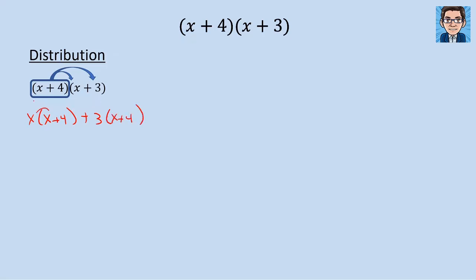Now if we do distribution on each of these, we get x times x is x squared. The x times the 4 is 4x. Over here we get the 3 times the x is 3x. And then the 3 times the 4 gets us 12. To finish up, we just need to add our like terms — the 4x and the 3x — and get 7x. So we get x squared plus 7x plus 12. And that's the distribution method.